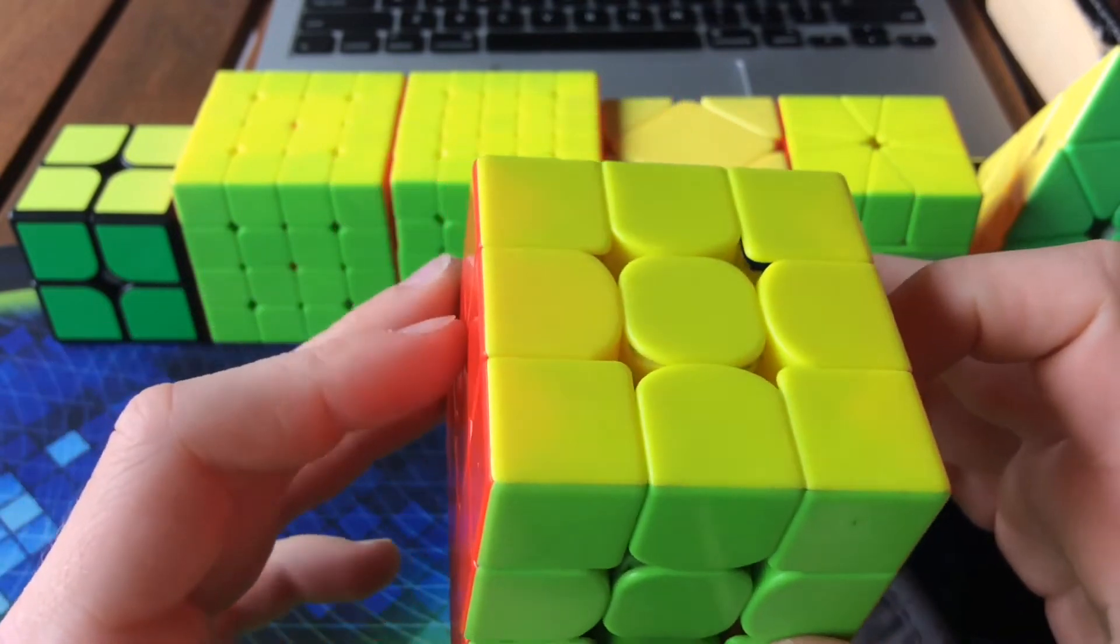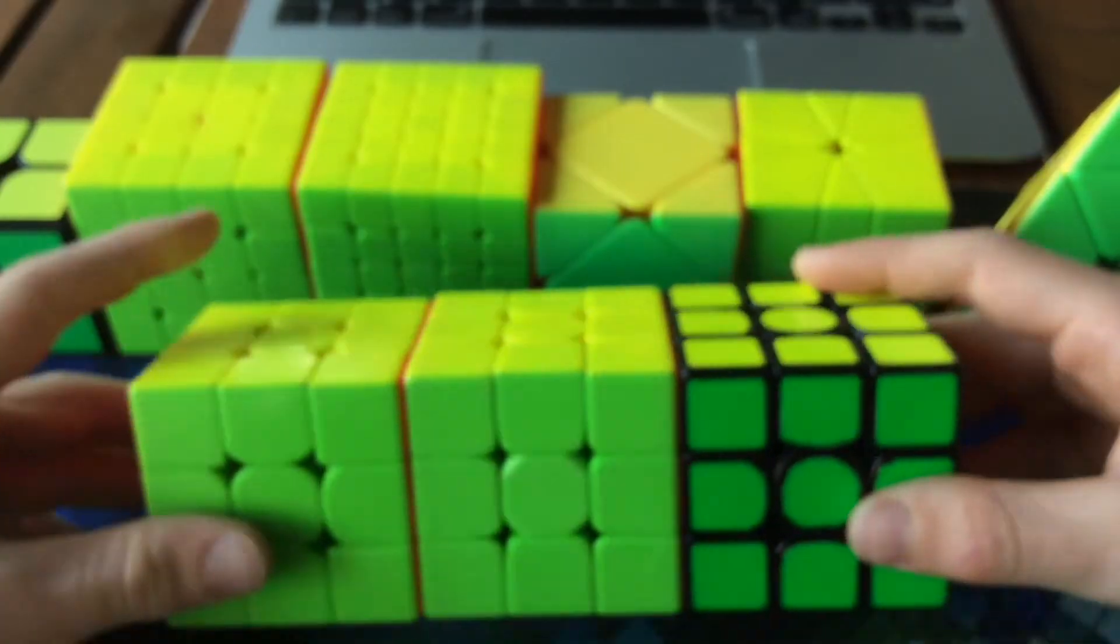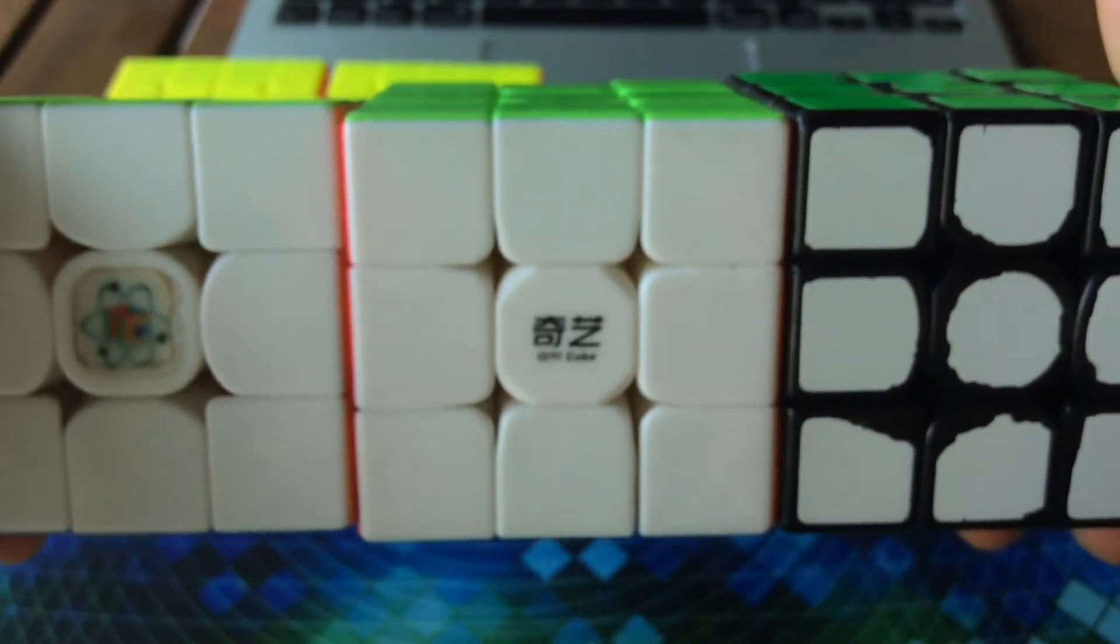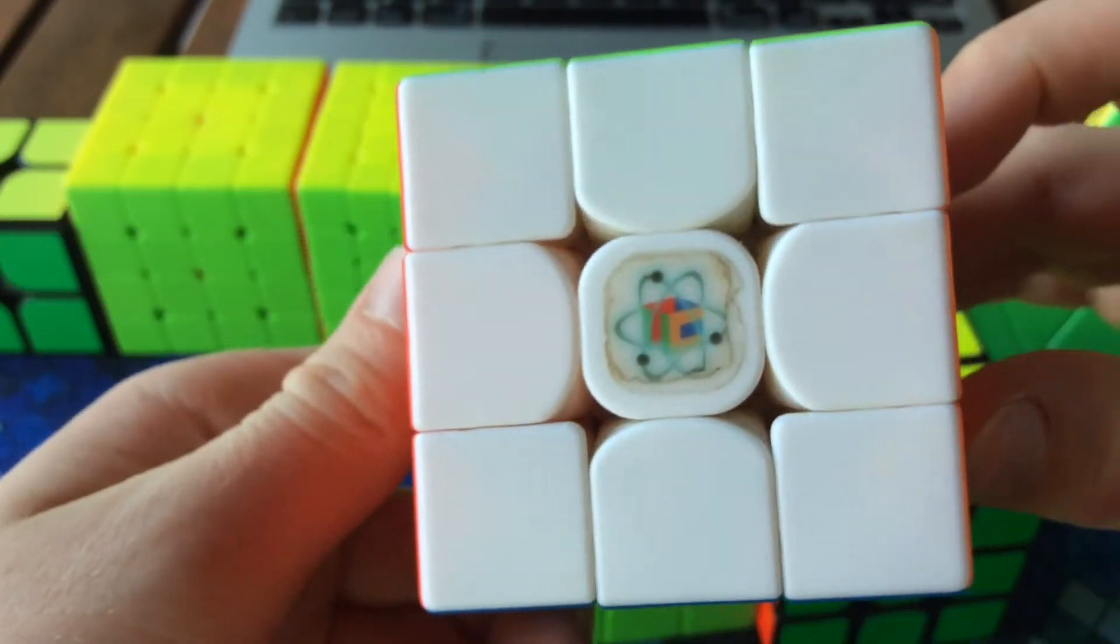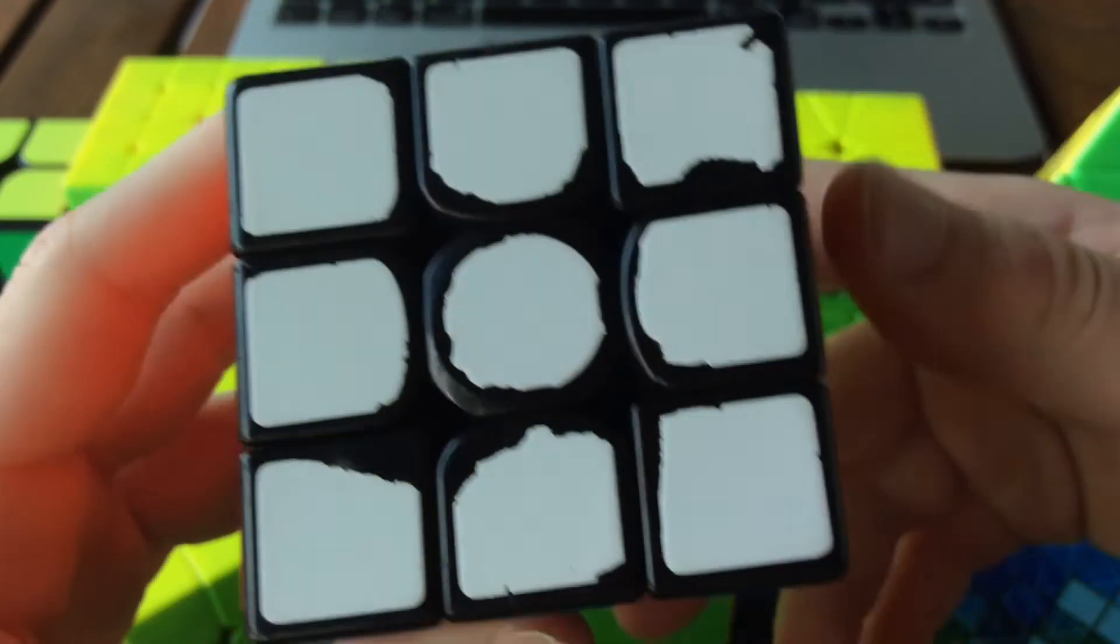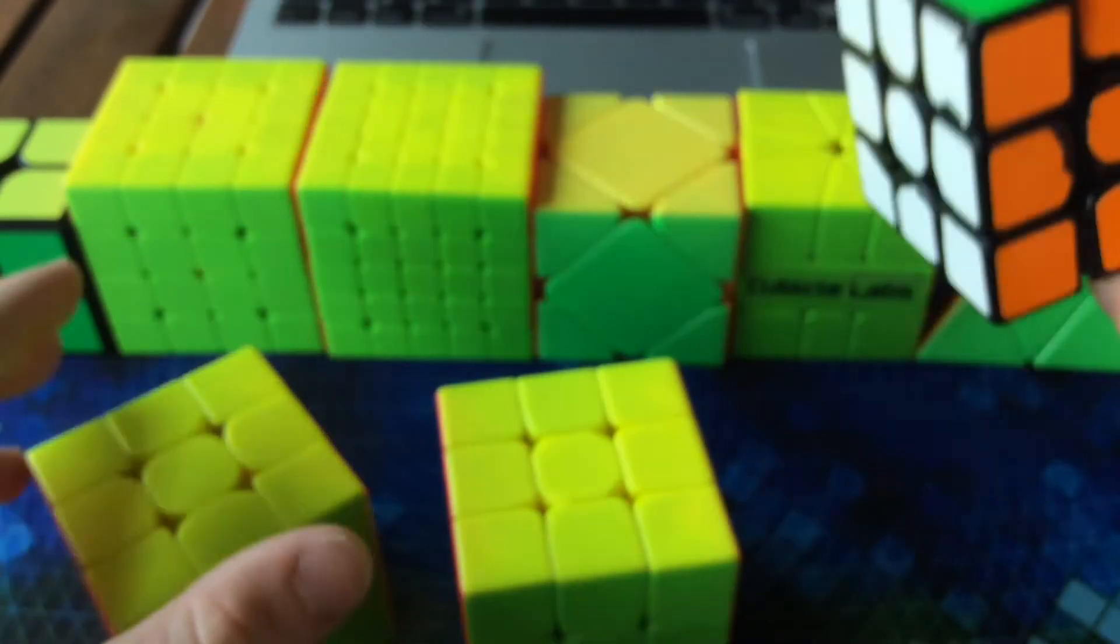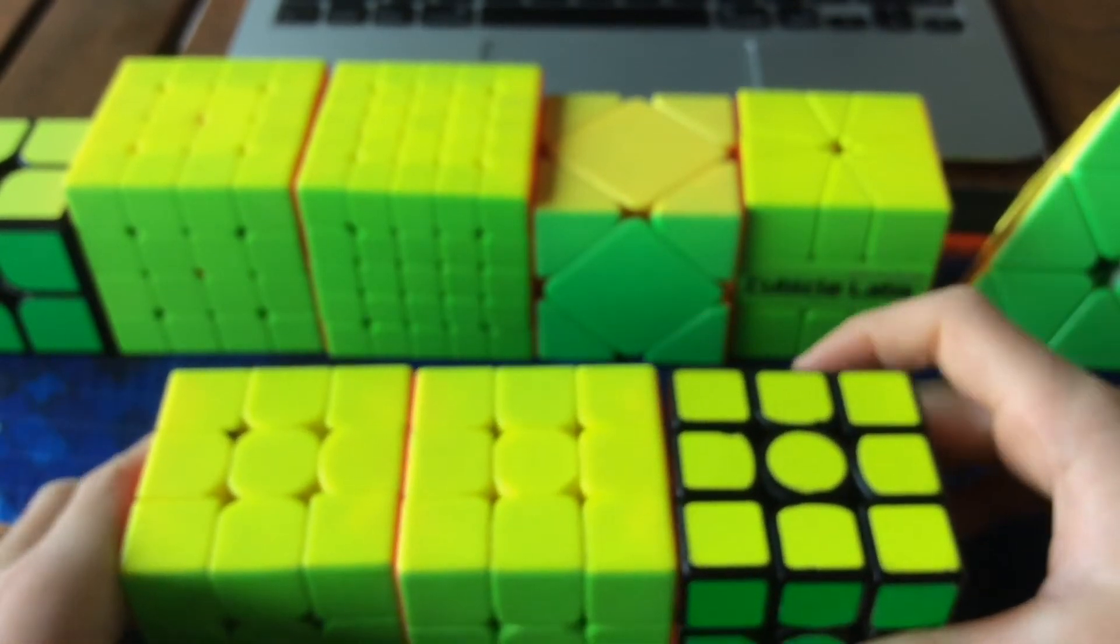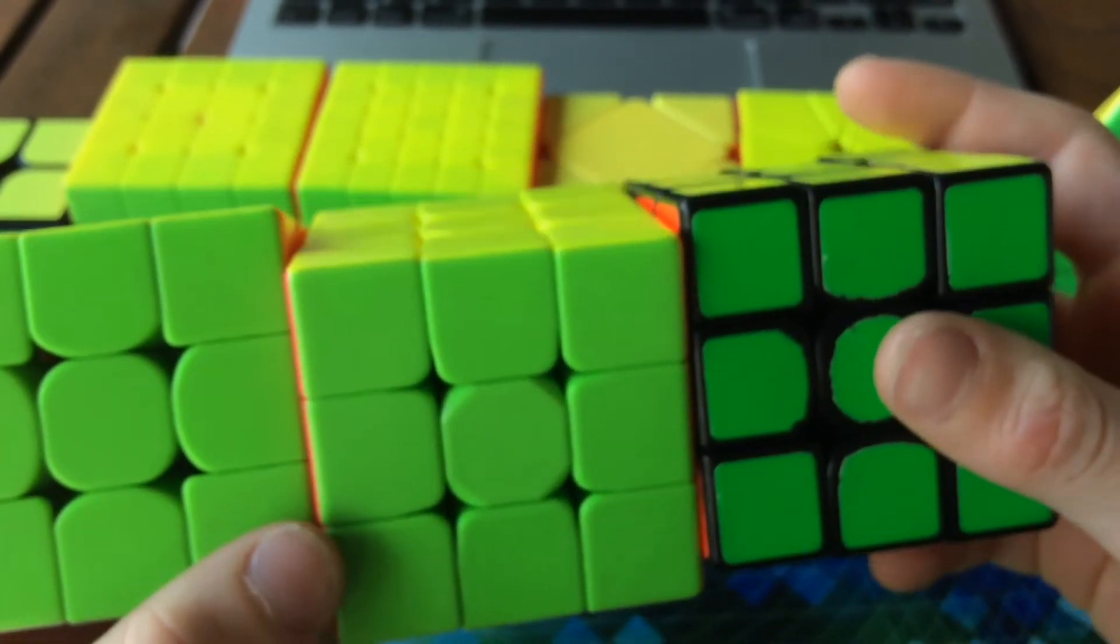For FMC, I'll be using these three cubes: the Cubicle Labs Valk M, the Warrior W, and the Gans Air UM. The stickers are really peeled. My goal for FMC, I've never competed in this before, so I think just to get a sub 40 single would be nice.